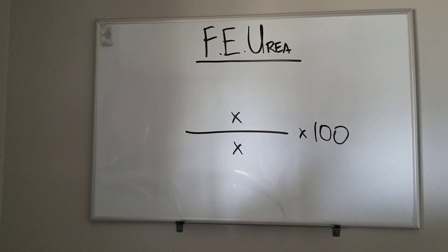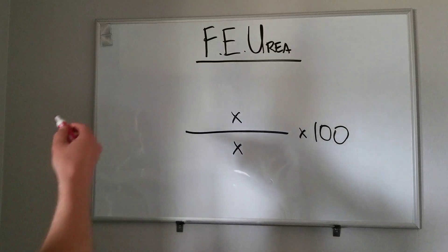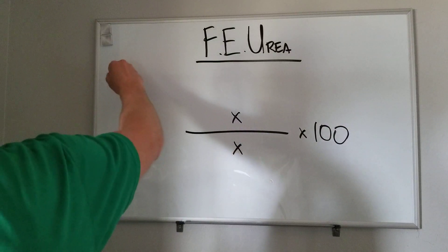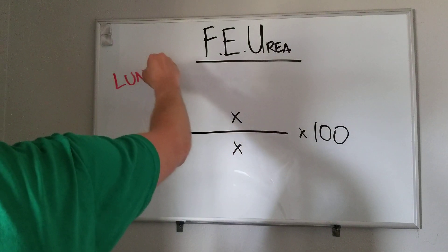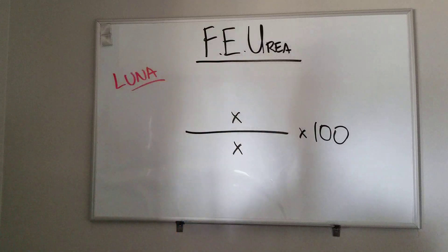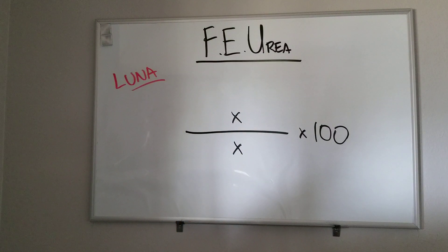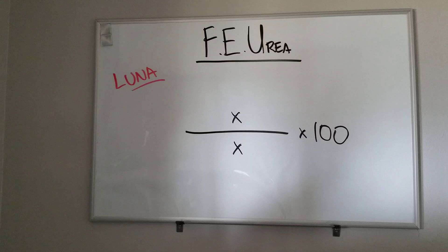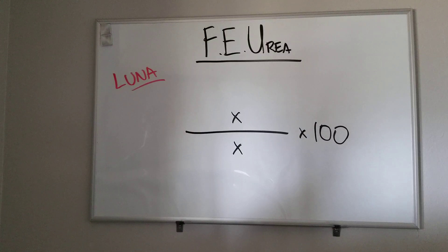The way to remember FE urea is the same way I do with FENa, and that is Luna Lovegood, because Luna right there is your first one and everything's opposite. What you're doing is inputting urinary values and serum values into this calculation, and it's going to spit out a percentage that tells you if the patient has a pre-renal, intrinsic, or post-renal type azotemia.